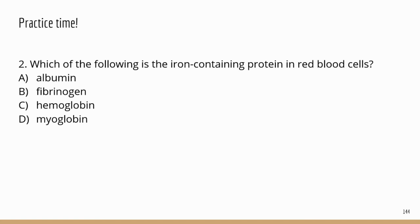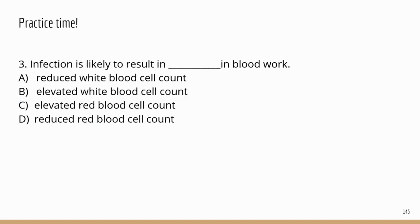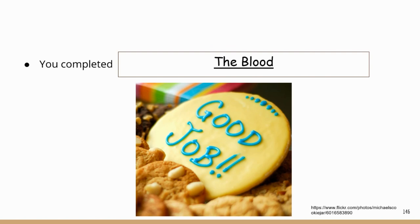Number three: infection involves protection and defense, so that involves white blood cells. The infection is going to stimulate the body to make more white blood cells to fight the infection, so that's going to be elevated white blood cell count. Good job, guys — you completed the blood. If you think the video is helpful, let me know by subscribing, leaving a comment, and giving the video a thumbs up.